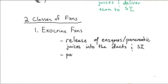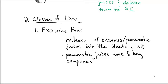And the pancreatic juices have five key components. We mentioned these when we were talking about chemical digestion, but we're going to review them again here.